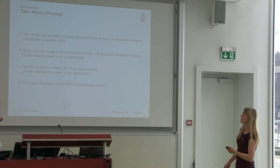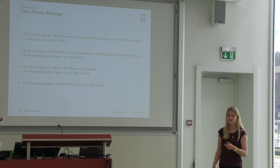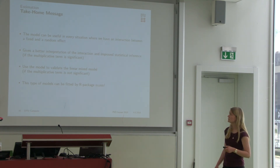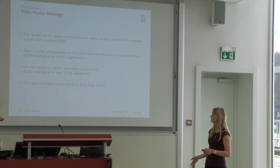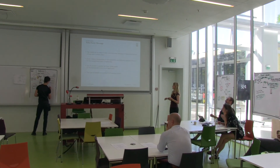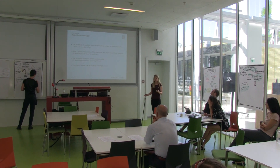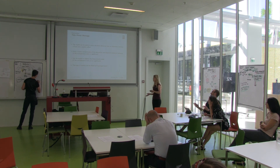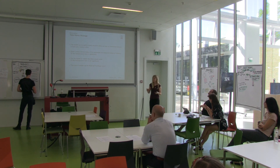The take-home message from my presentation is that this multiplicative model can be useful in every situation where we have an interaction between a fixed effect and a random effect. We use it to get a better interpretation of the interaction and improve statistical inference if the multiplicative term is significant. And if it's not significant, then we can use the model to validate the linear mix model and see that the linear model is sufficient.